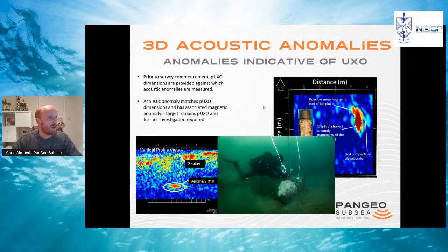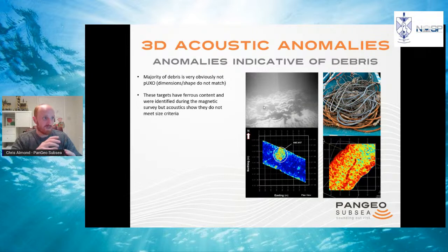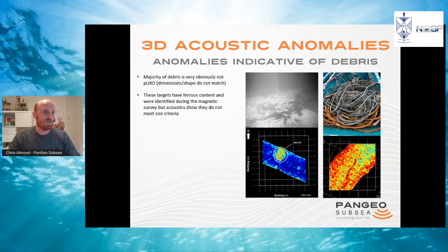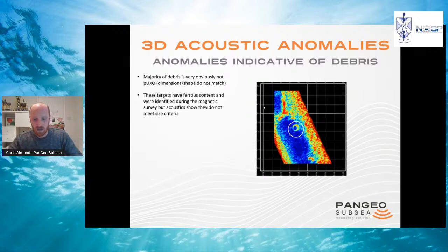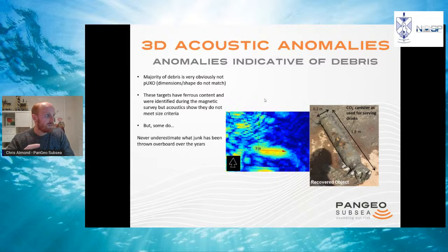Comparing those targets to objects that are quite clearly debris from the acoustics: prior to the acoustic survey, you would have had only the magnetic signature, knowing there's definitely something ferrous there. Without acoustics, you would have spent several hours deburring that target only to find, in this case, clumps of wire or chain. There are further examples where it is very clear that what the magnetics detected is not a potential munition.